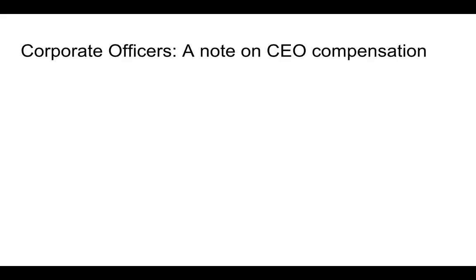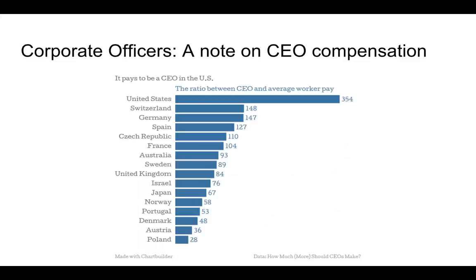I wanted to talk about the compensation of a CEO using some charts and graphs. This first chart is a comparison of CEO pay and average worker pay in a couple of different countries around the world. As you can clearly see, CEOs in the United States make, above and beyond, way more money than CEOs make anywhere else in the world — it's almost insane how much more money a US CEO makes on average than those in companies elsewhere in the world.